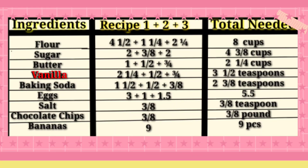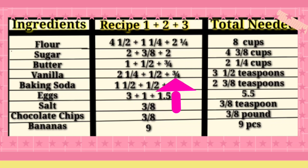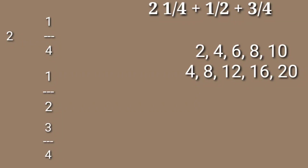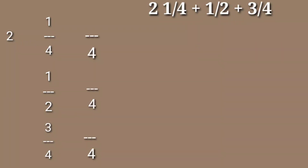The next ingredient is vanilla. From banana bread, we have 2 and 1/4 teaspoons of vanilla; from chocolate chip cookies, 1/2 teaspoon; and from sugar cookies, 3/4 teaspoon. Now let's add 2 and 1/4 plus 1/2 plus 3/4. The least common denominator is 4. For 2 and 1/4, set aside the 2 — multiply 4 by 1 to get 4, so just copy 1/4.